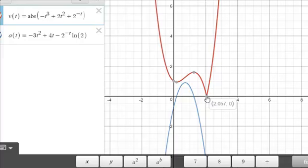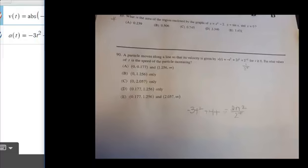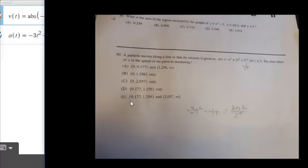Notice that our speed is increasing right here from 2.057 on. That's the part that wouldn't be included if we were just talking about where velocity is increasing. Speed, however, is also increasing from 2.057 on to infinity. So if we go back to our original problem here,